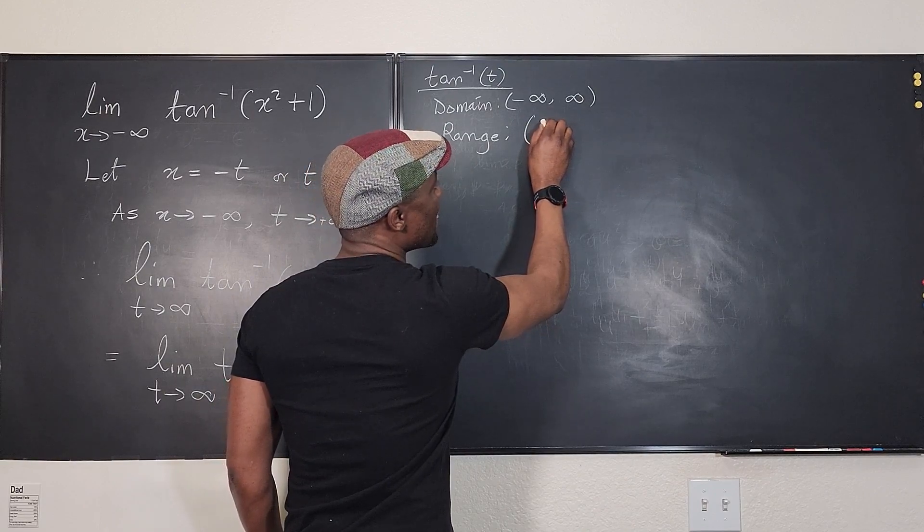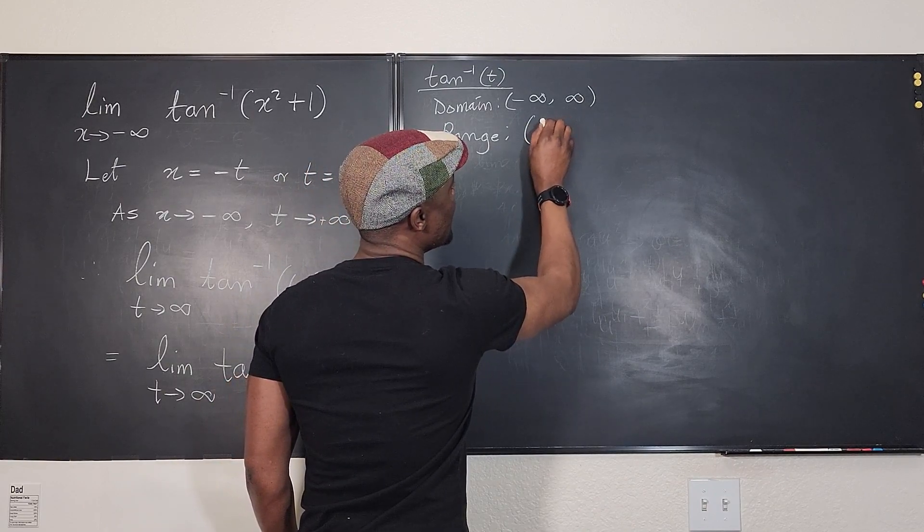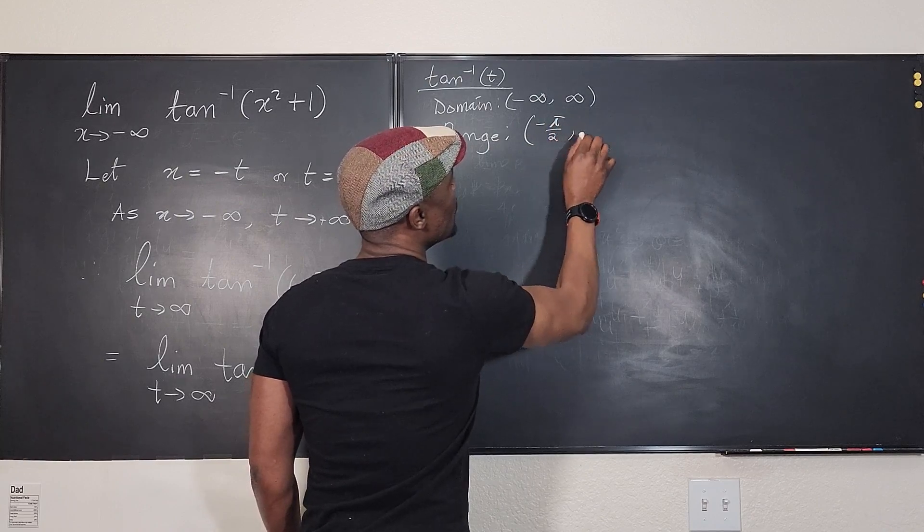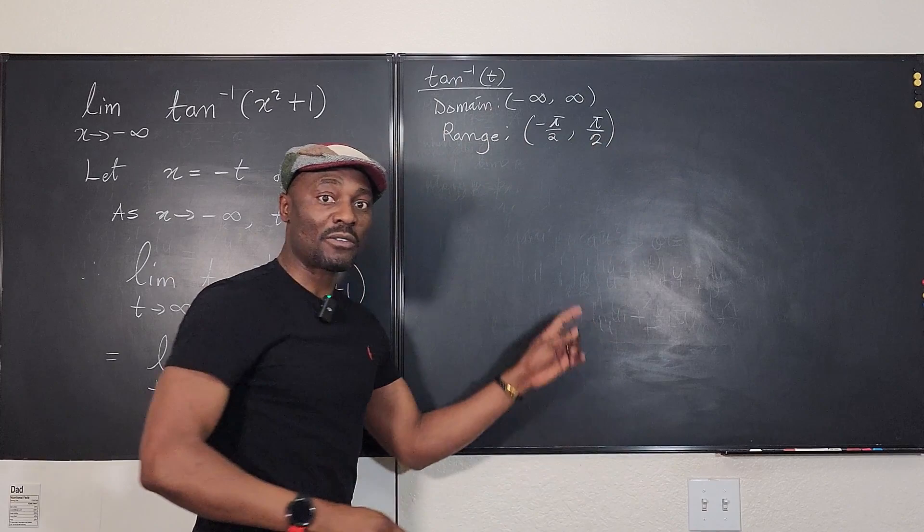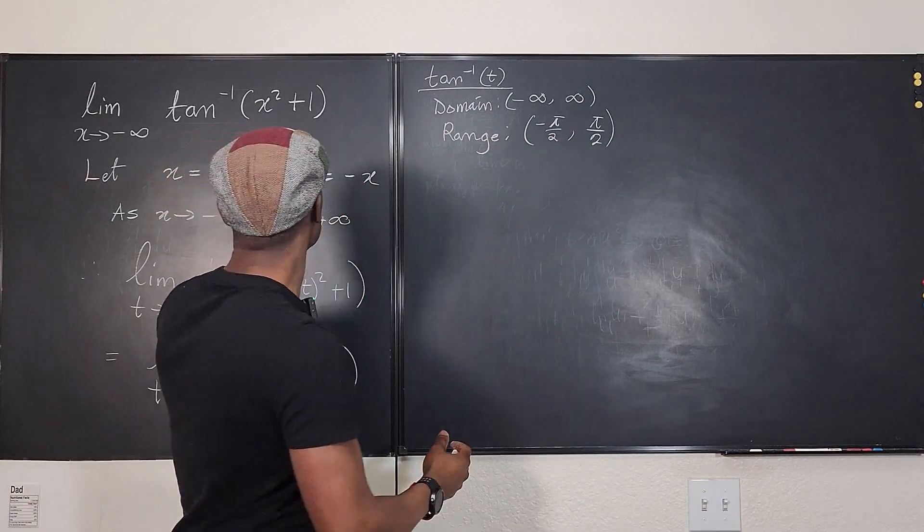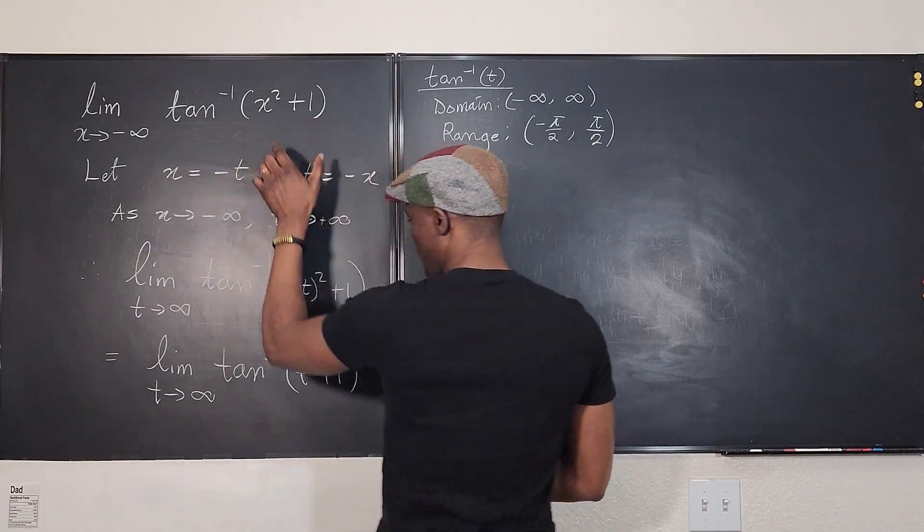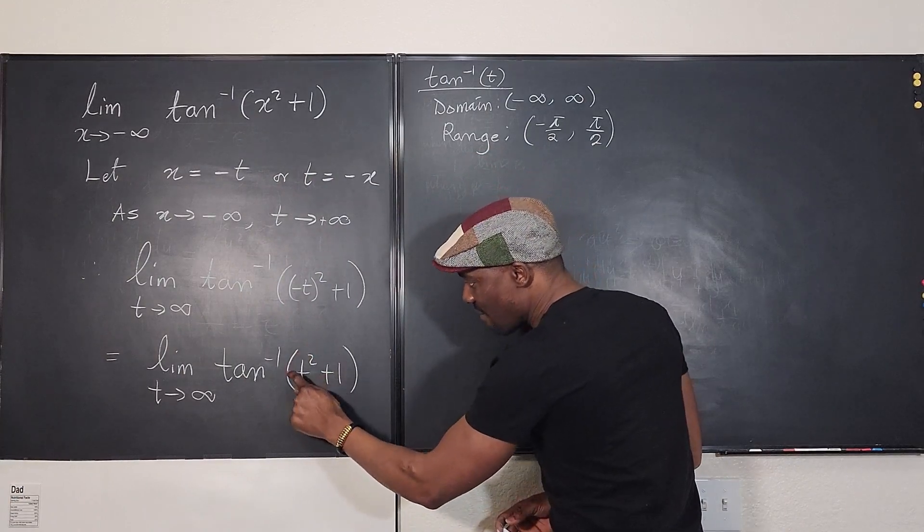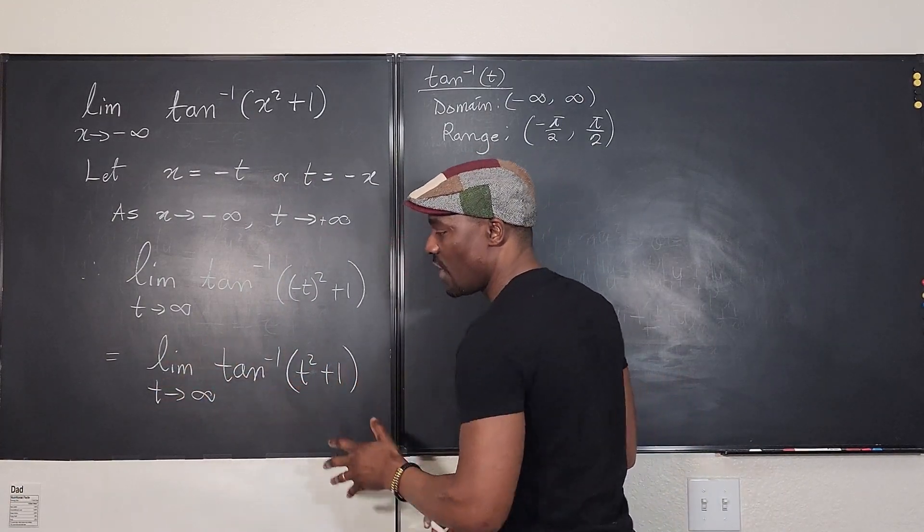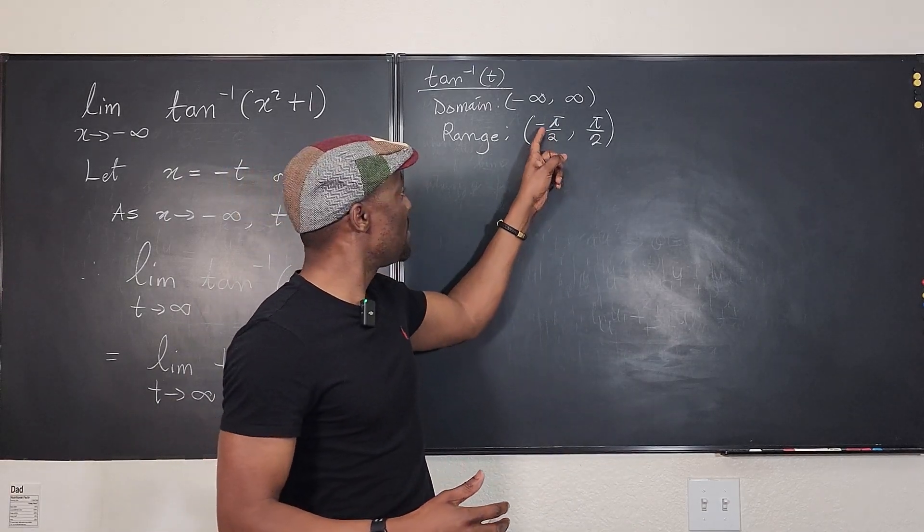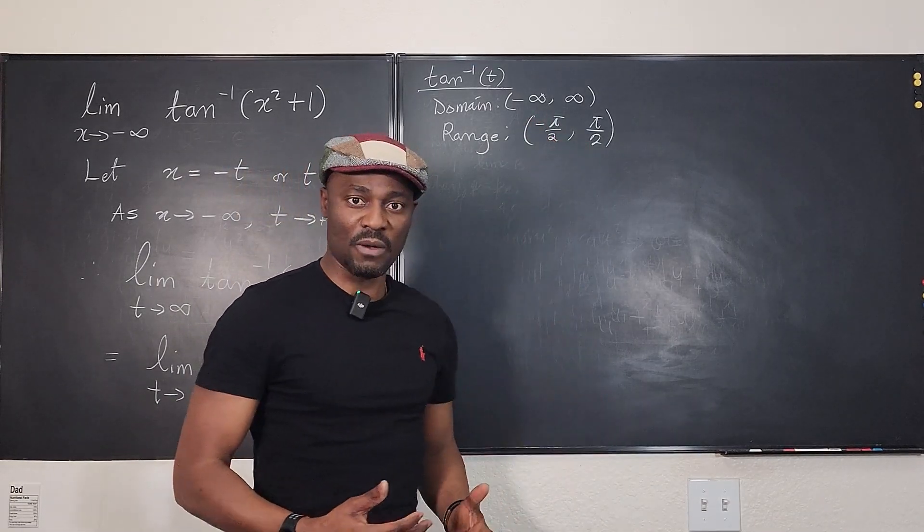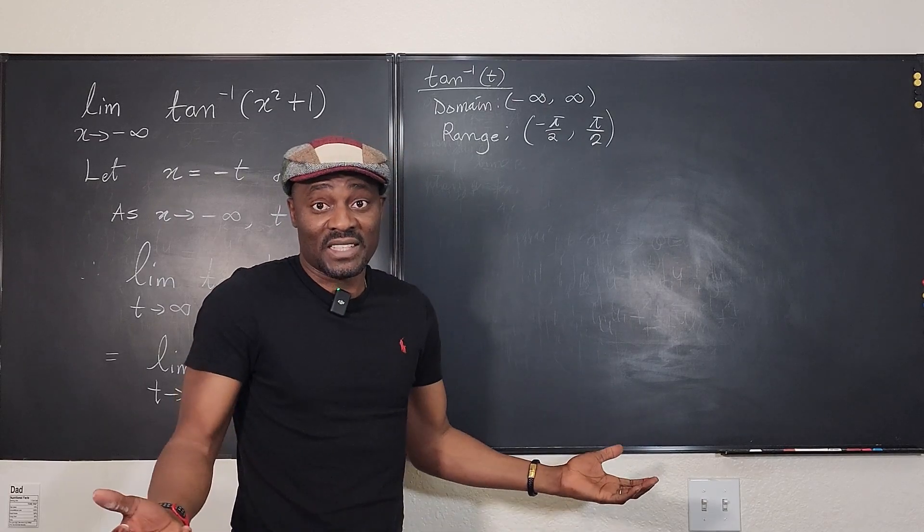The domain is from negative infinity to positive infinity, but what comes out of it, the range, is just restricted. It's from just after negative π/2 to just before π/2. You cannot go outside of these values. Since that's all we have, this is an argument. Whatever this is, what comes out of this will definitely be between negative π/2 and π/2. And that's it.